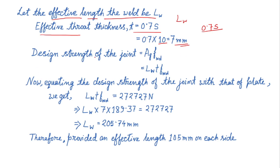Next, design strength of the joint, which is equal to Ag times fwd. What is Ag? Ag equals Lw times t, length of the weld times effective throat thickness. And fwd is the design strength of the weld.